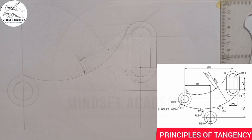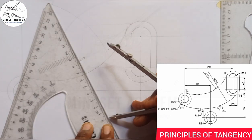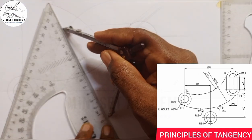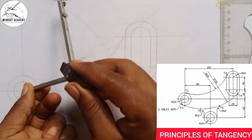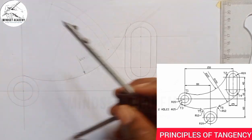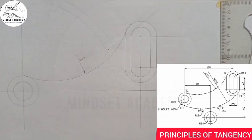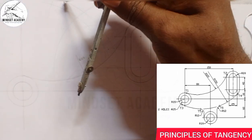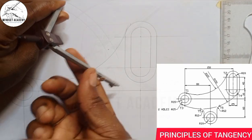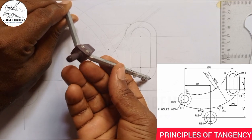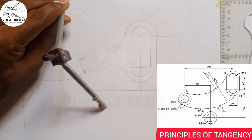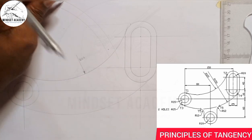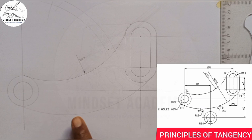For internal circles we subtract, so 150 minus 20 gives us 130. I'll measure 130 on my ruler from 0 to 130, place it at the center point, and strike an arc. I'll also place it at the second center point and strike another arc. Where those two arcs meet, I'll place my compass and draw the connecting arc, using faint line first.